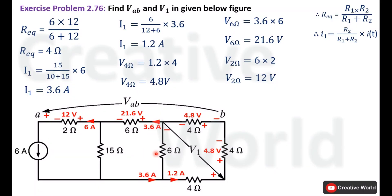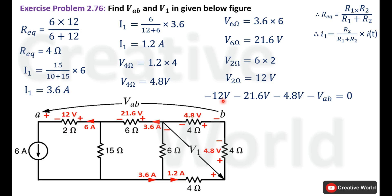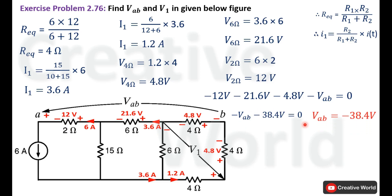We apply Kirchhoff's voltage law inside this semi-closed loop to calculate VAB, assuming counterclockwise current direction. Starting around the loop: the 12 Volt is taken with a minus sign, 21.6 Volt with a minus sign, 4.8 Volt with a minus sign, and VAB with a minus sign, since the current-entering terminal is negative in each case. Their sum equals minus 38.4 Volt, so VAB equals minus 38.4 Volt.